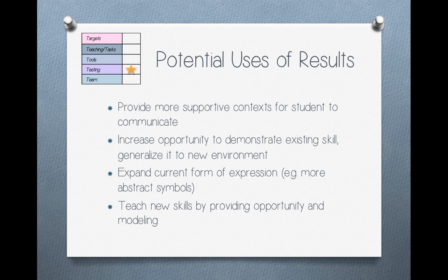We might go vertically — expanding something the student does in one form to a new form, such as moving from a concrete or action-oriented representation to a symbolic representation, if appropriate. And we may determine what new skills to teach by ensuring there's an opportunity — that space for the child to demonstrate the skill — then providing modeling or instruction in that moment on how to use that particular skill.